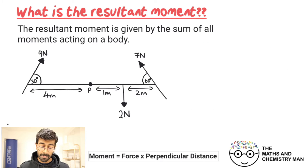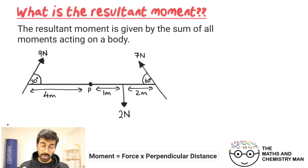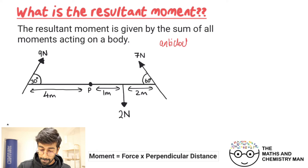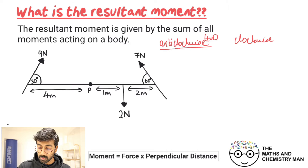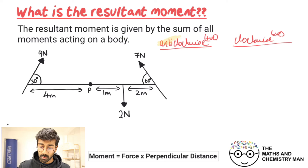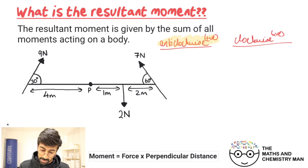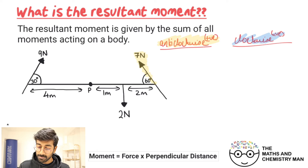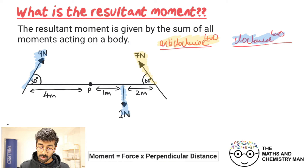Here's another example. This time the forces are acting at angles, so we need to find the perpendicular distances to those forces. Setting up anti-clockwise as positive and clockwise as negative, the seven Newton force is going anti-clockwise.